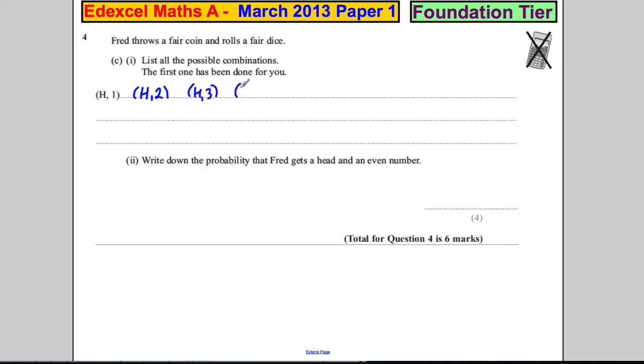Or he could get a head and a four, or he could get a head and a five, or he could get a head and a six. Alternatively, if he didn't get a head on the coin, he could get a tail.